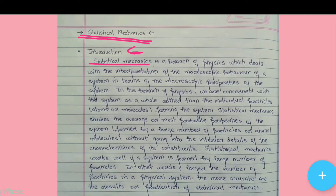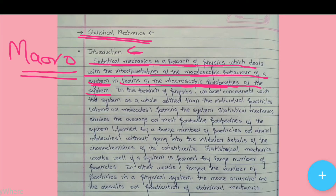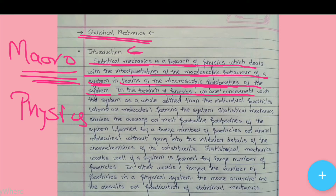Statistical mechanics is a branch of physics which deals with the interpretation of the macroscopic behavior of a system in terms of the microscopic properties of the system. In this branch of physics, we are concerned with the system as a whole rather than the individual particles, atoms and molecules forming the system.